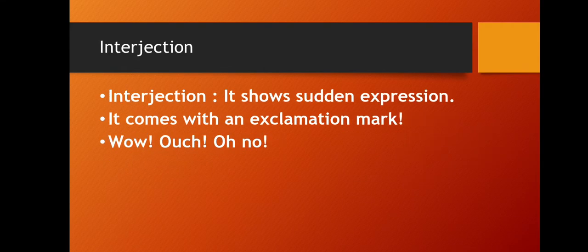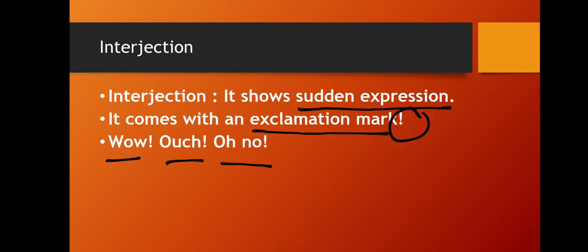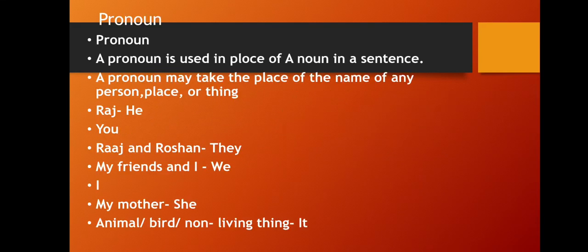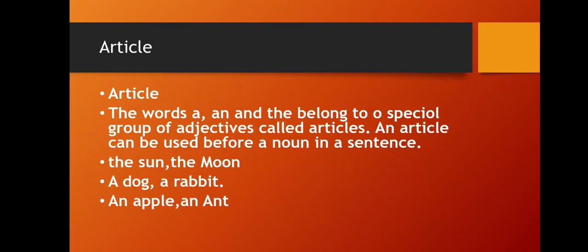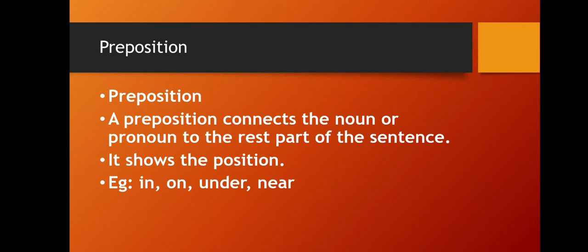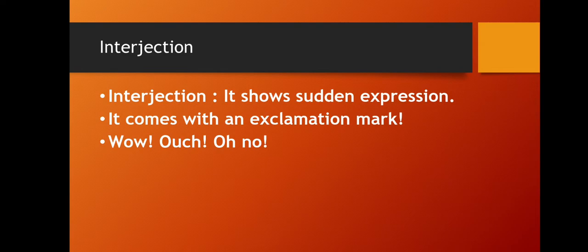Interjection shows your expressions like wow, ouch, oh no, and has an exclamation mark at the end. So this way in short, we've covered introduction to parts of speech: noun, pronoun, verb, adjective, article, adverb, preposition, conjunction, and interjection.